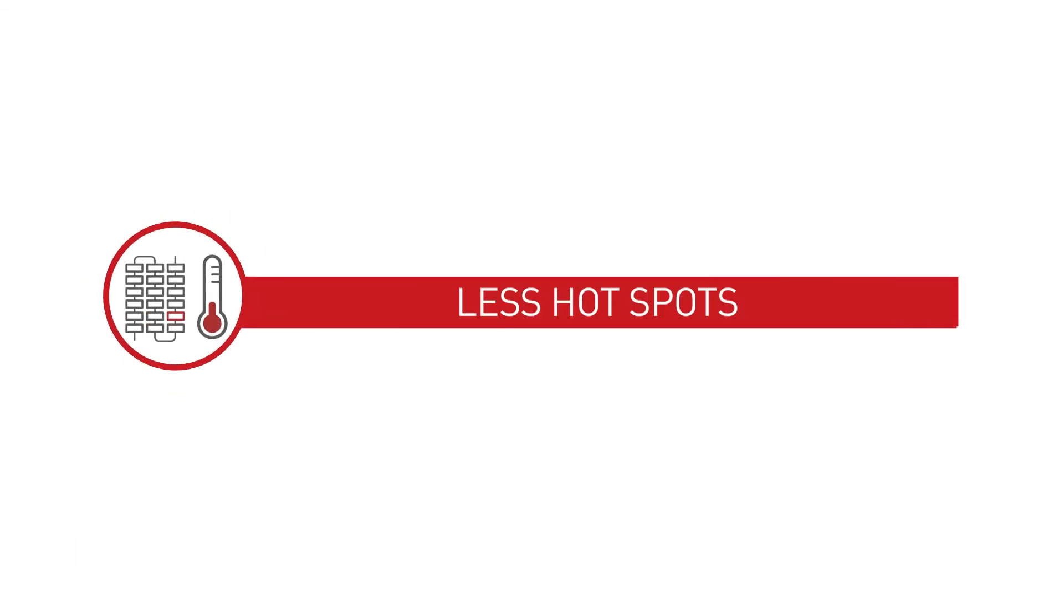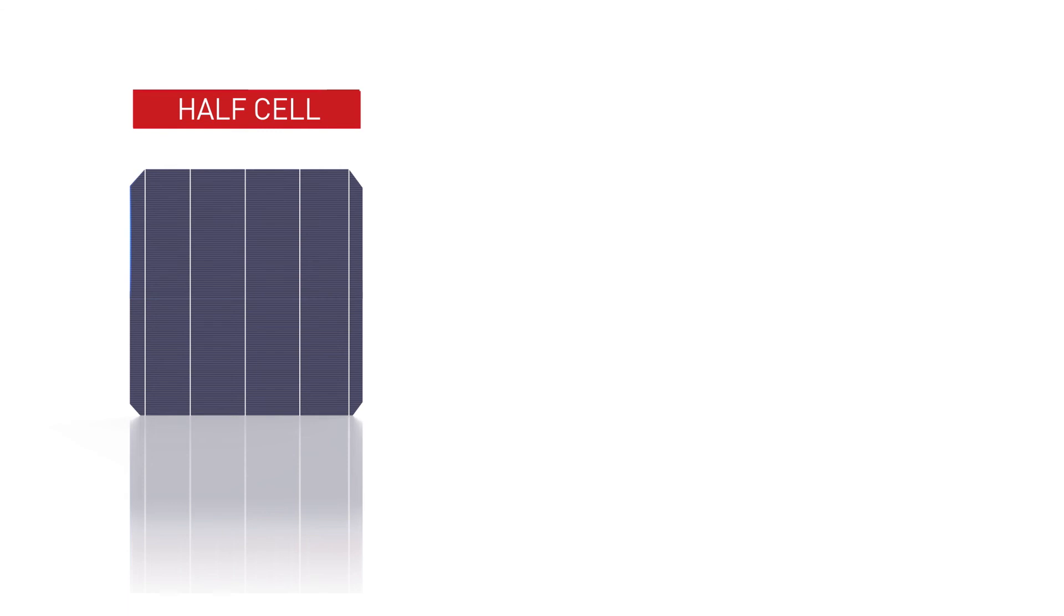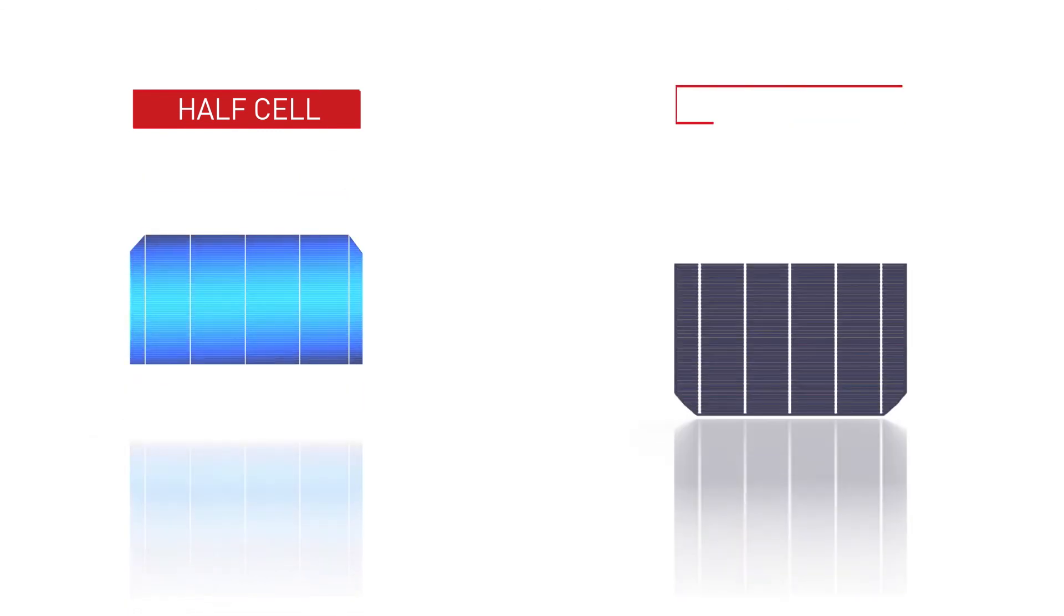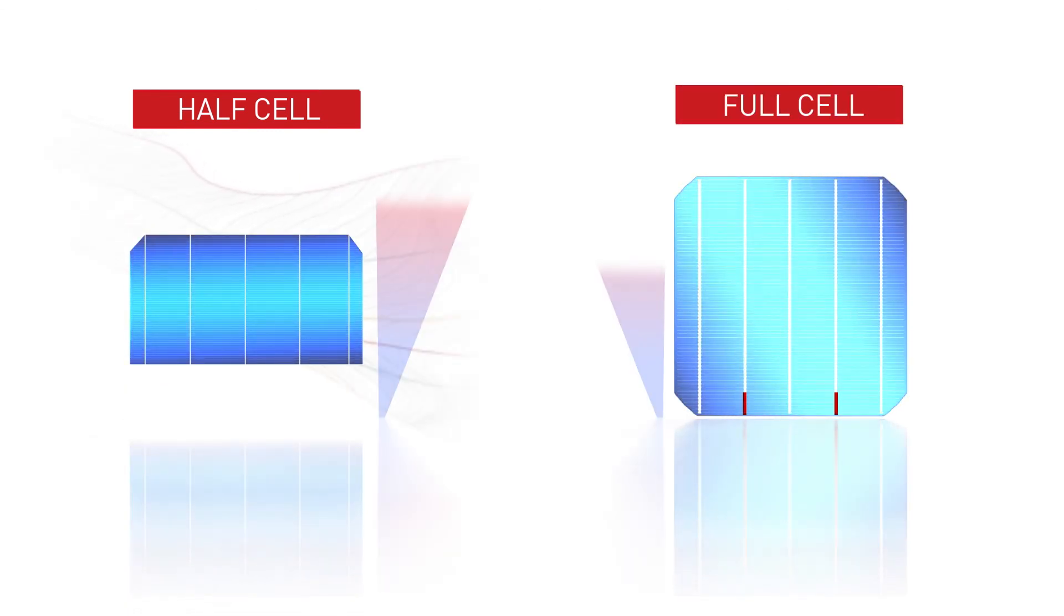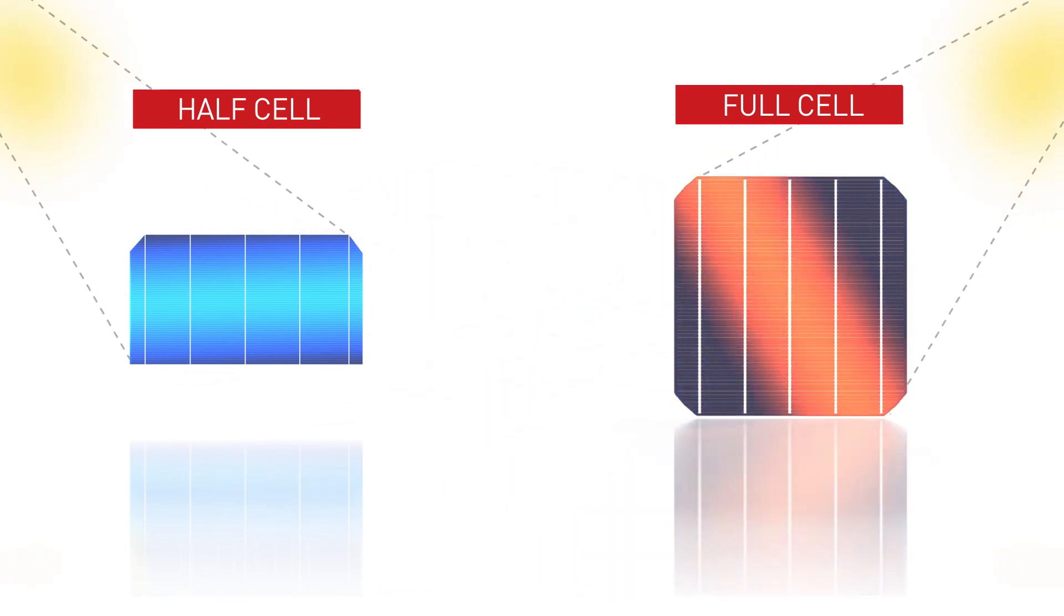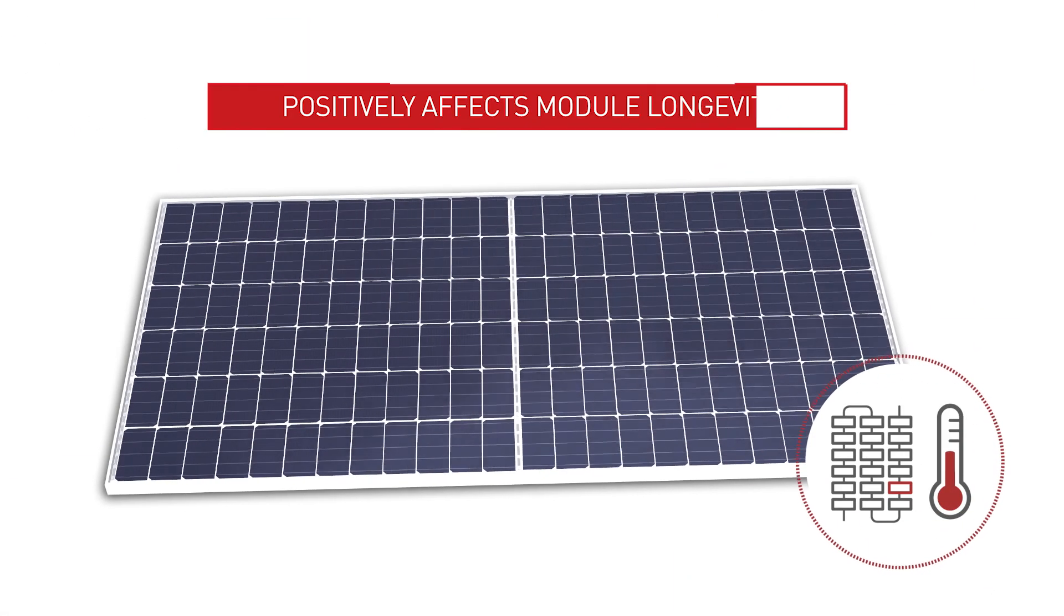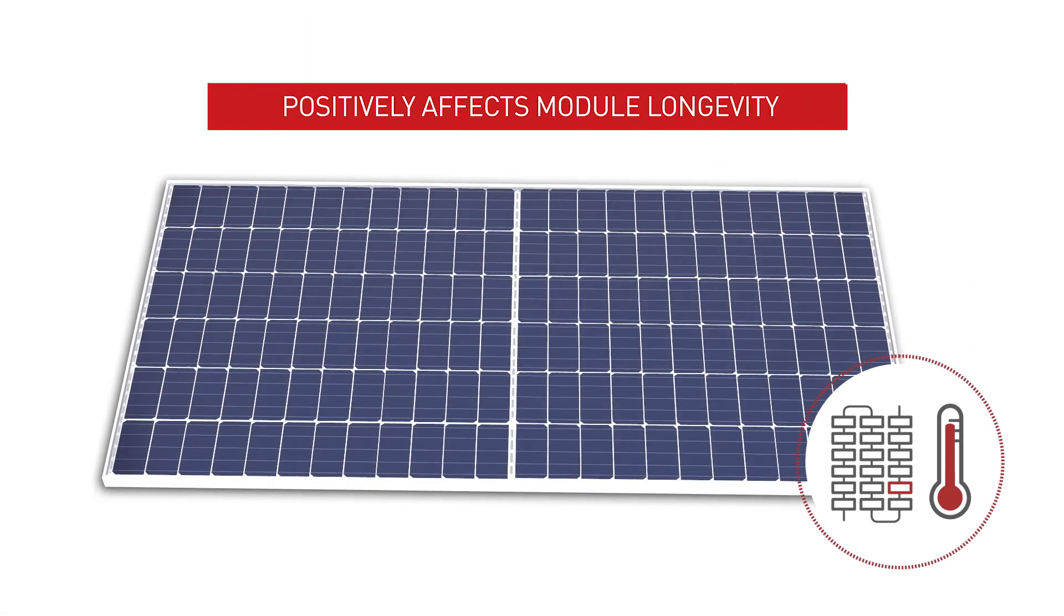Less hotspot. With half-cells, one cell generates only half the current than that of a standard cell, so heat production declines, thus reducing the chances of hotspot generation when one solar cell in a module cell string is shaded. Lower heat production positively affects module longevity.